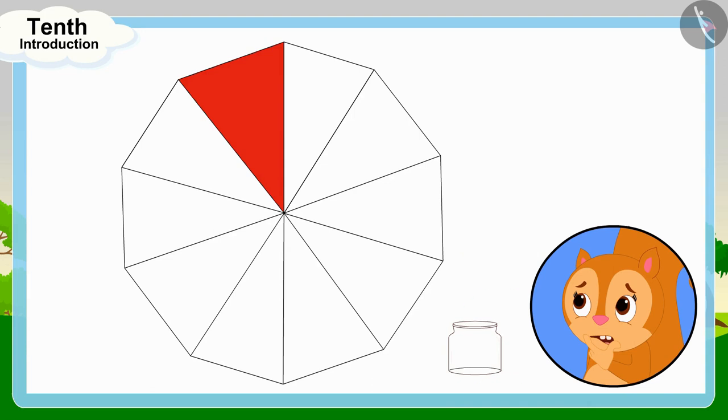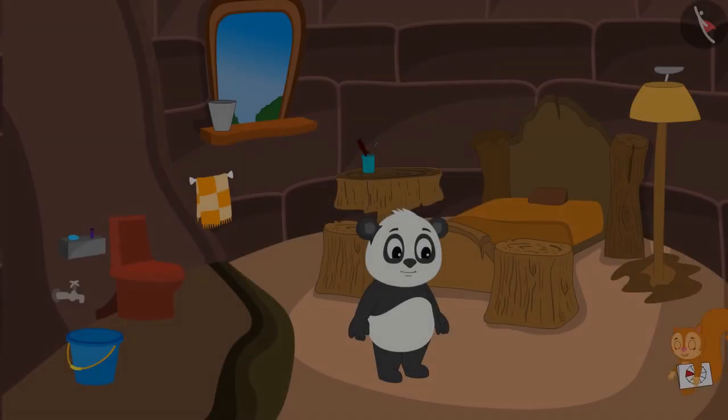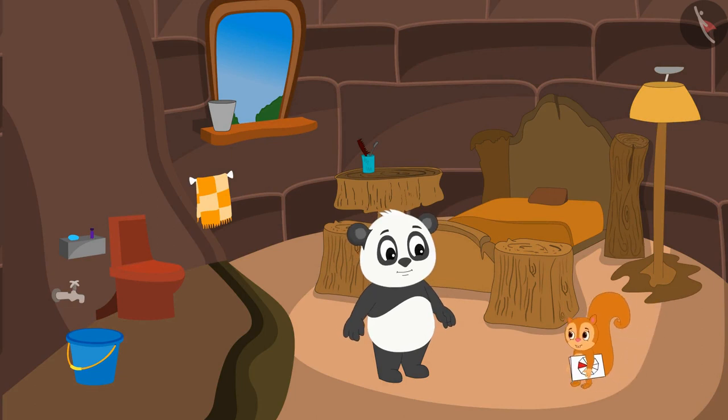This flower is made up of 10 similar triangles and Chanda has colored one of these triangles. This means Chanda has filled red color in one tenth part of the flower. Chanda immediately took her unfinished greeting card and reached her friend Golu's house.